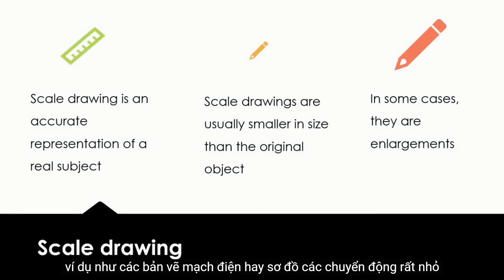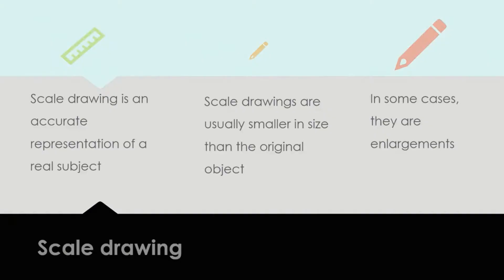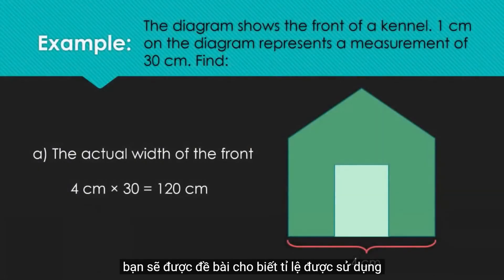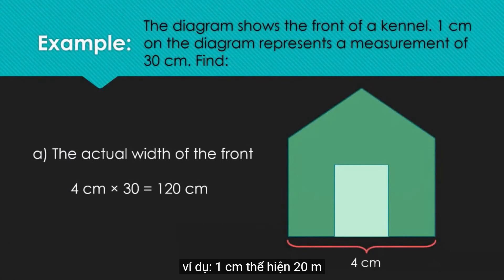Examples of these are drawings of miniature electric circuits and very small watch movements. You will generally be given the scale to use. For example, 1cm represents 20m.